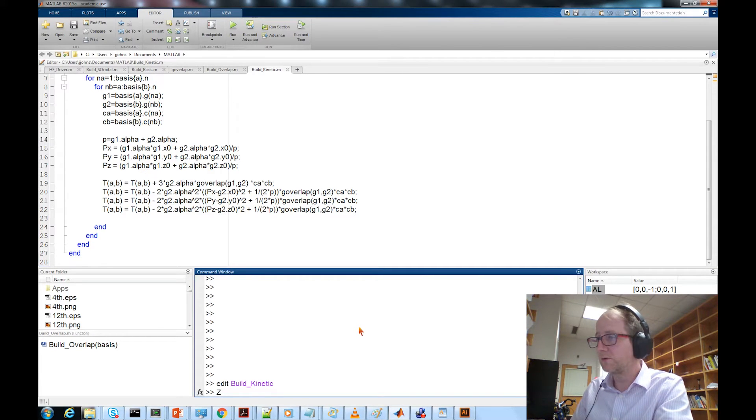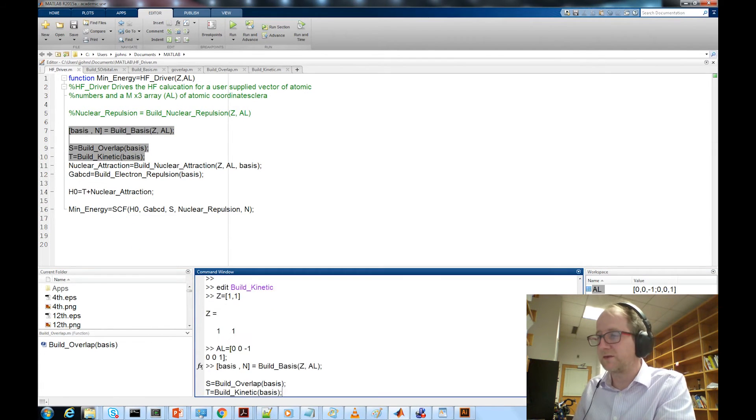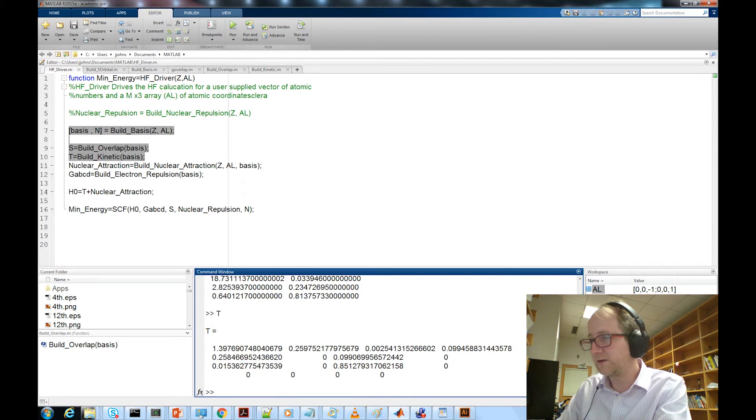Let's try this out with a hydrogen molecule. Let's build our list of z. Let's build our atomic coordinates: 0, 0, minus 1, 0, 0, 1. So let's build our basis set, build the overlap matrix, and then build our kinetic energy. Let's see what t is.